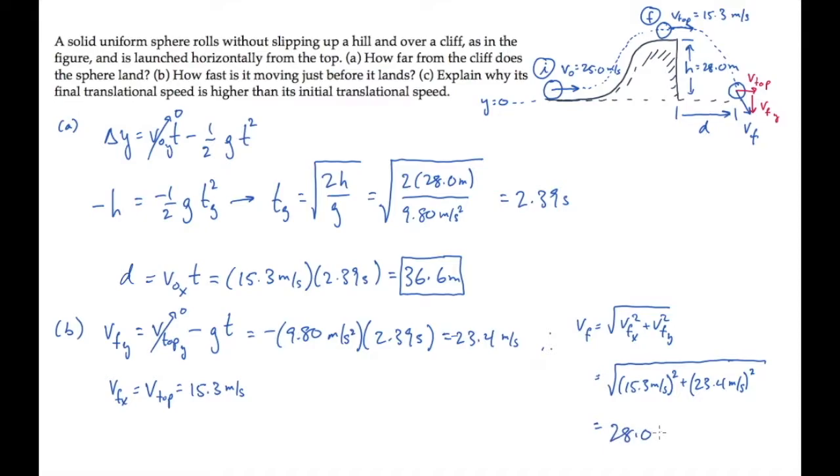Notice that that is faster than the ball was translating at the very beginning before the ball rolled up the hill. Part C asks us to explain why it's moving faster here than it was at the beginning. The ultimate reason is because of energy conservation, so let's choose the initial and final points shown here at the very beginning and very end of the motion and write down the work and energy equation.